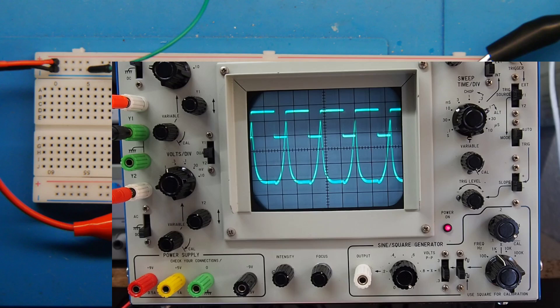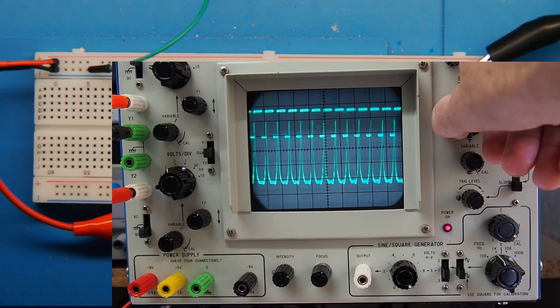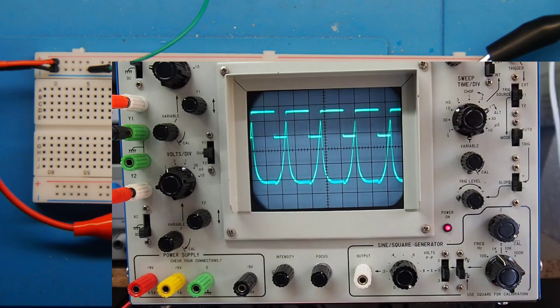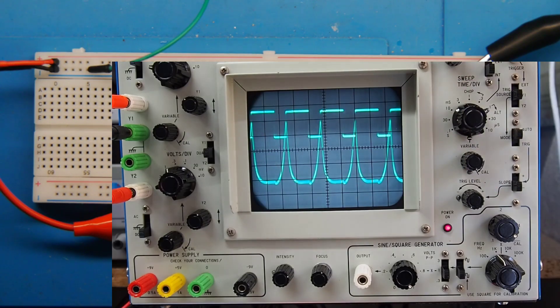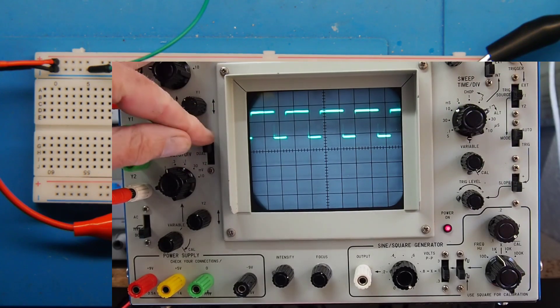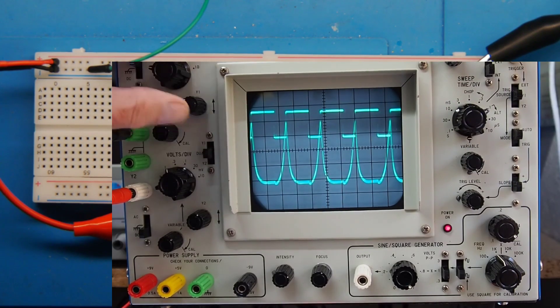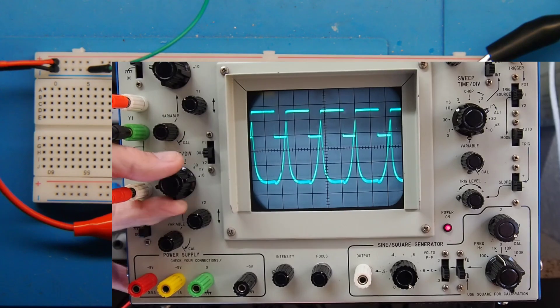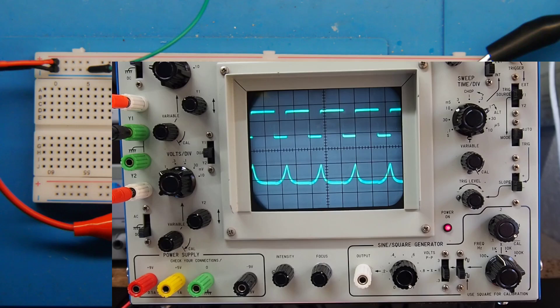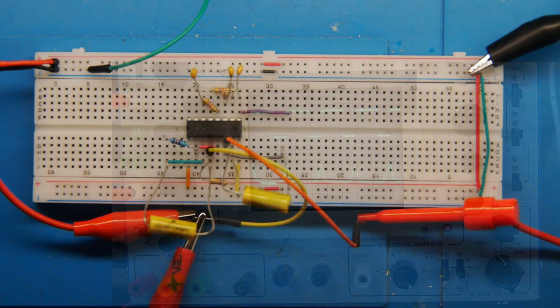And we've certainly got some capacitor discharge-charge going on there too. Yeah, so that's a very different type of oscillation being produced from the circuit in the case of output one, and then we've generated our triangle wave on output two. So there we go, that's dual output oscillator with the 4049.